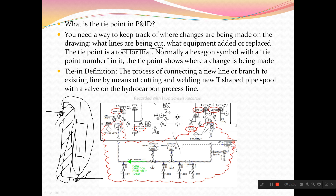It also shows what lines are being cut. The hatched part of the line is going to be demolished — that line will be cut. Equipment added or replaced means when your plant gets old, like five or ten years, equipment maintenance and working conditions lead to less productivity. So you replace your equipment, and whatever nozzle connections your equipment has, all those nozzle connections will become tie points.